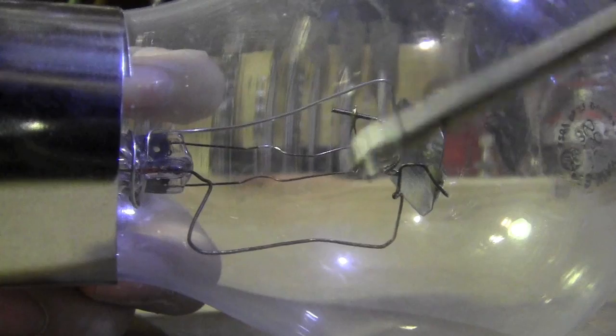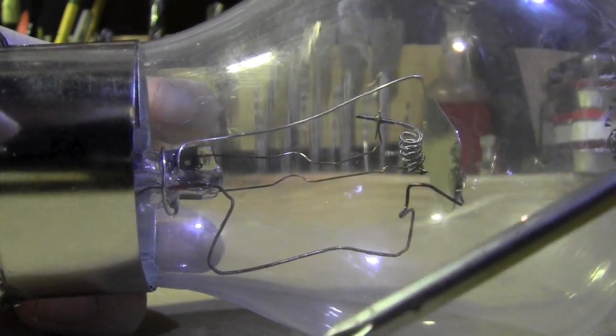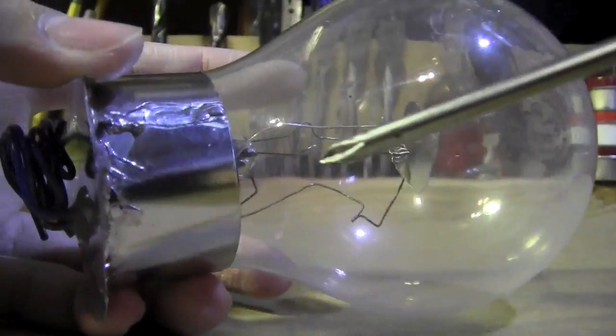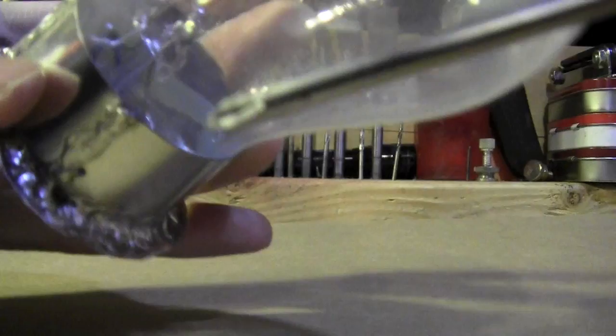These two wires were the filament leads, and then this wire here, there used to be another one I think which is the other three-way filament. Then I added another one with just some hookup wire. And there's the base.